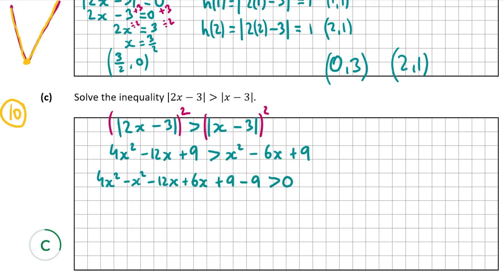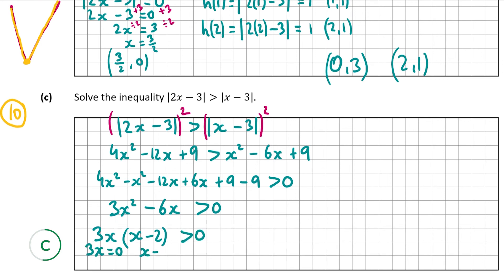Moving x squared minus 6x plus 9 to the left-hand side: 4x squared minus x squared minus 12x plus 6x plus 9 minus 9, all greater than 0. Combining like terms gives 3x squared minus 6x greater than 0. Factorizing using the highest common factor of 3x: we get 3x times (x minus 2) greater than 0. Setting each factor equal to zero: 3x equals 0 gives x equals 0, and x minus 2 equals 0 gives x equals 2.